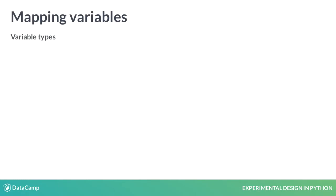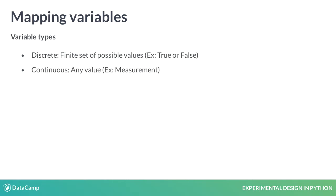We can encounter many types of variables, and one way to classify them is as either discrete or continuous. A discrete variable can have a finite set of possible values — for example, a binary true or false. A continuous variable can have an infinite number of values, like a measurement.